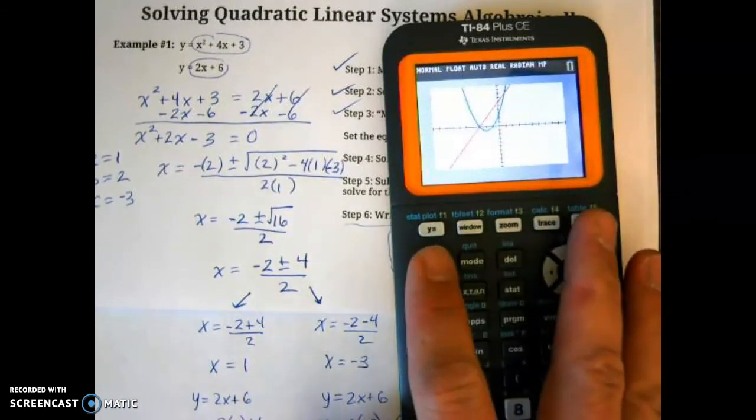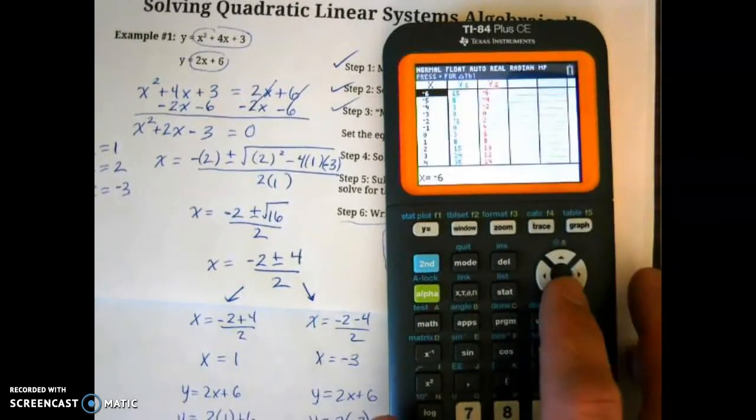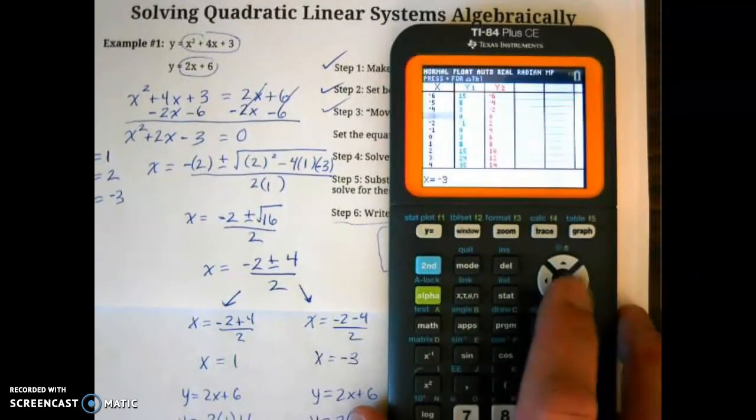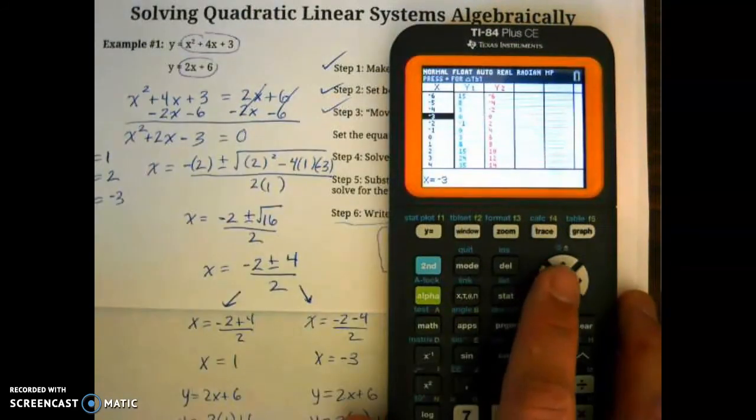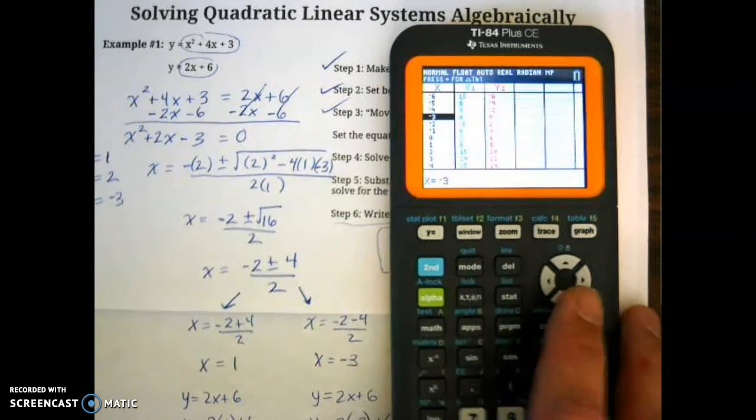I prefer to use the table. If you're going to the table, so negative 3, 0 is right here. You can see that negative 3, 0 is a part of both equations. So therefore, that would be an intersection or a solution. And then 1, 8. 1, 8 right here is part of both.